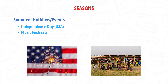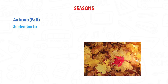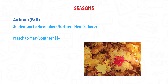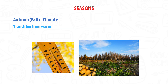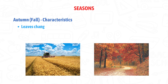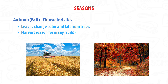Autumn! It's from September to November on the Northern Hemisphere and from March to May on the Southern Hemisphere. Its climate transitions from warm to cool, with crisp air and decreasing daylight.